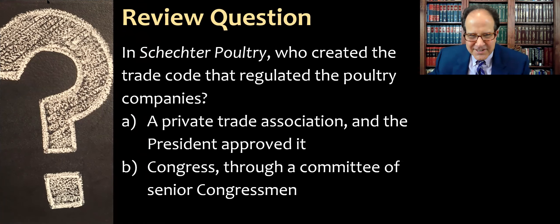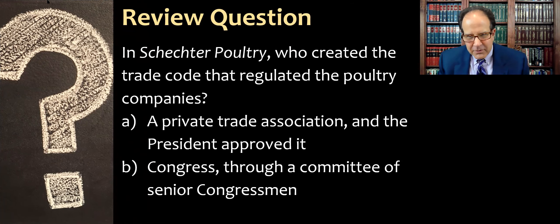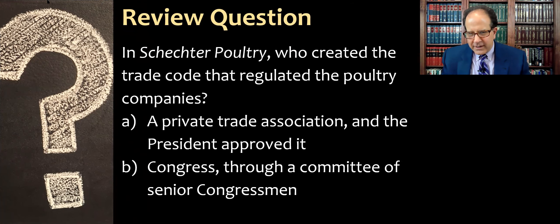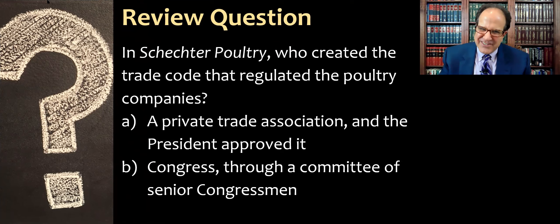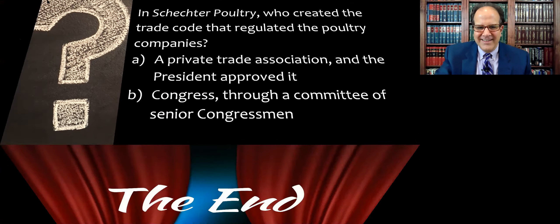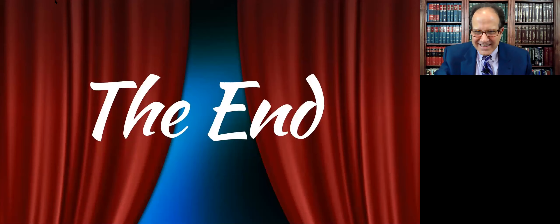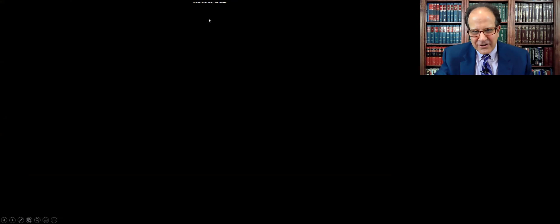Here's a review question to see if you've been paying attention. In Schechter Poultry, who created the trade code that regulated the poultry companies? A: a private trade association, and then the president approved it. Or B: Congress through a committee of senior congressmen. Hopefully you know the answer — it was supposed to be an easy question. If you don't, you should go back and review this video. That concludes our lecture about A.L.A. Schechter Poultry. Thank you.